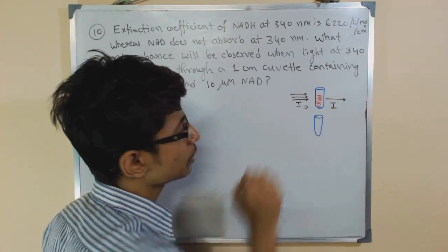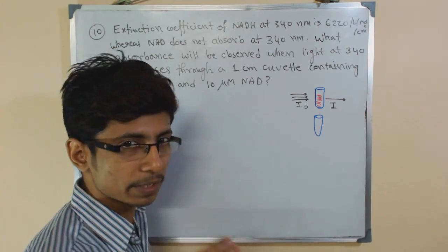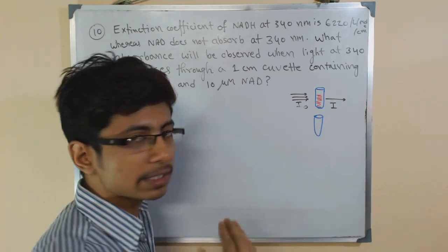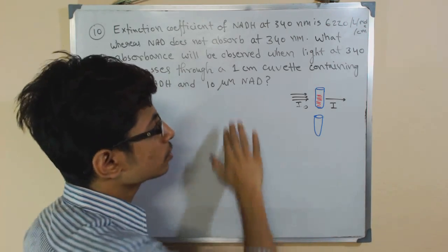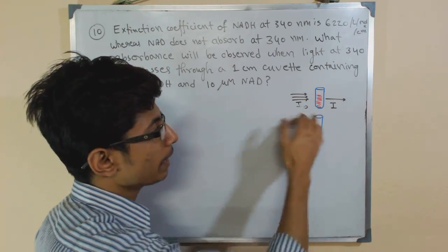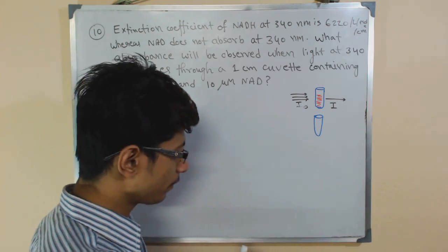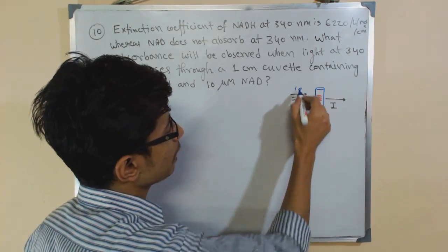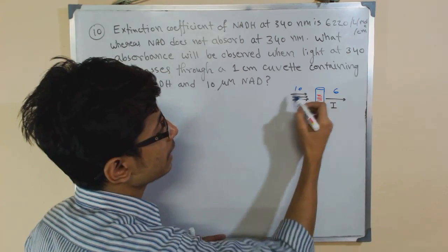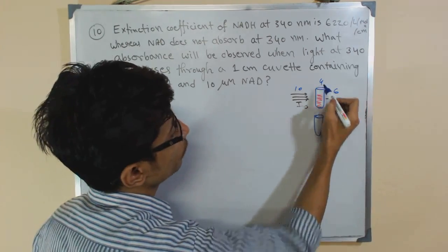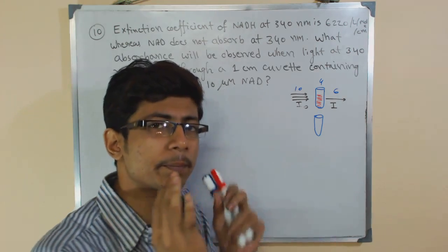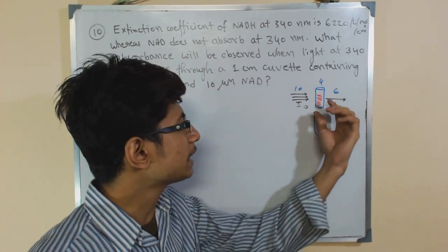The light hits the cuvette containing the solution at intensity I₀ and exits at intensity I. The absorbance is determined by the relationship between I and I₀. For example, if the entering intensity is 10 and the exiting intensity is 6, then the solution absorbed 4 — simple stuff.